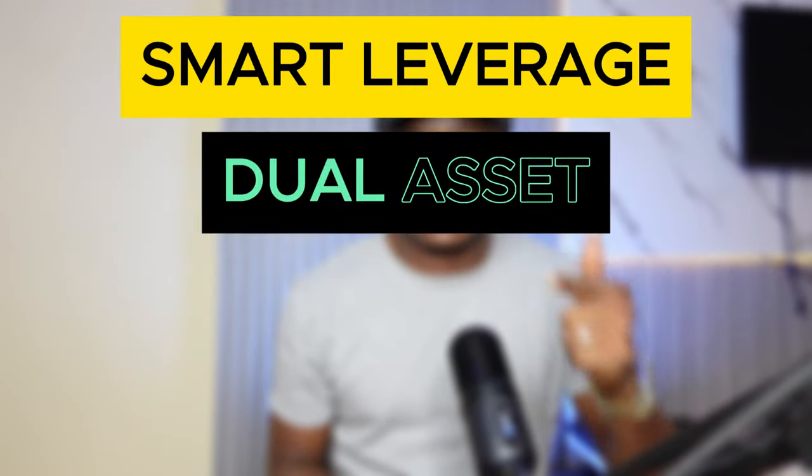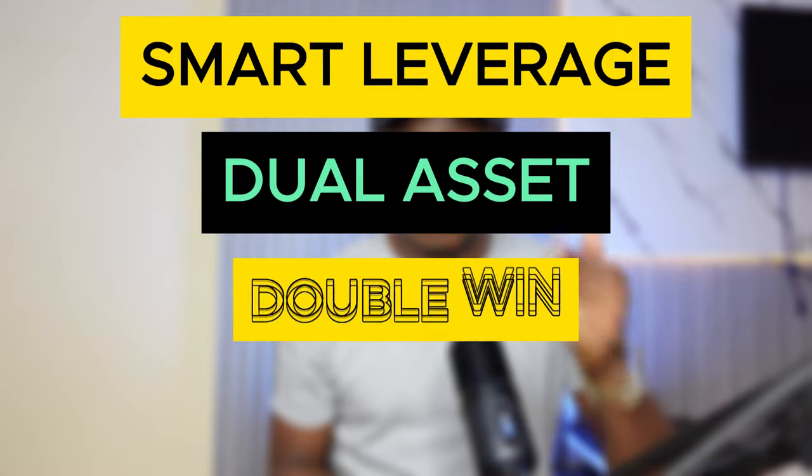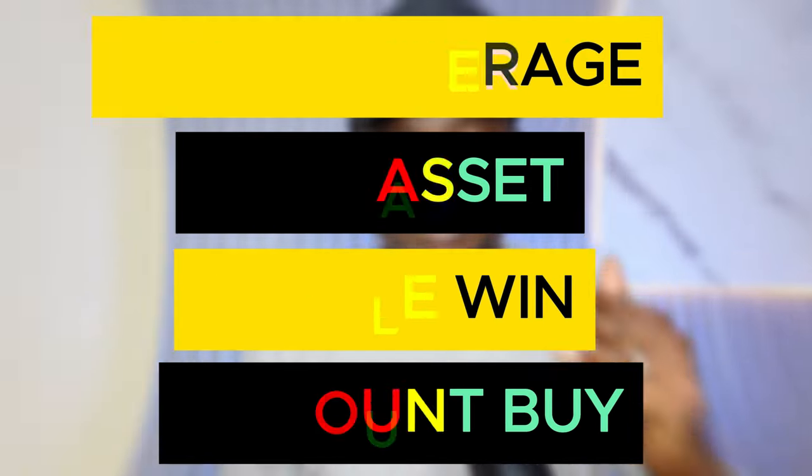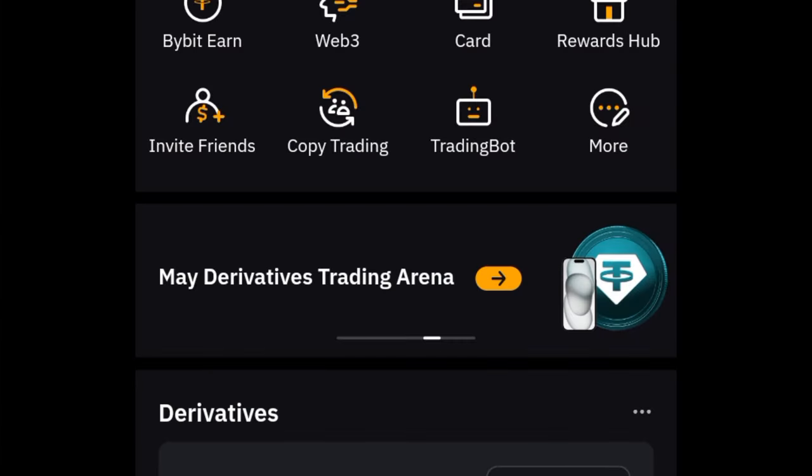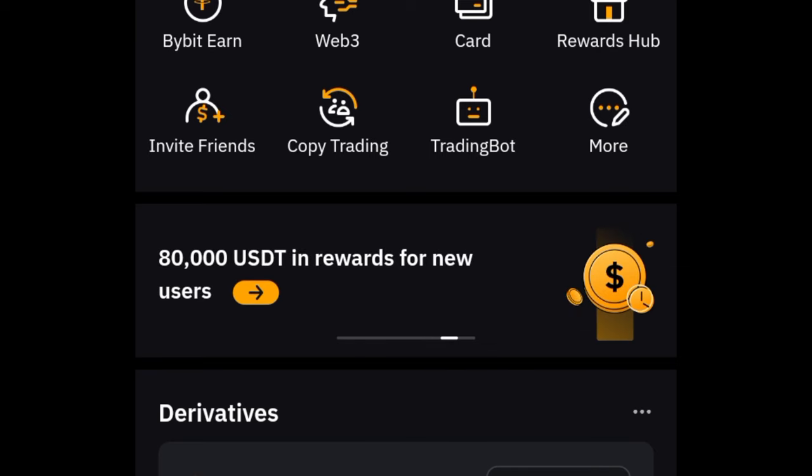The four structural products are: Smart Leverage, which is my favorite; Dual Asset; Double Win; and Discount Buy. You can access them using the Bybit mobile app or the Bybit web version, but in this tutorial I'm showing you how to access all of them using the mobile app.